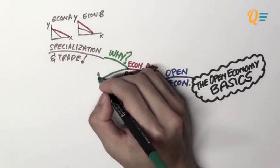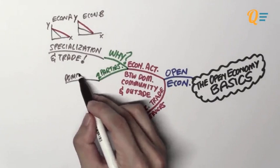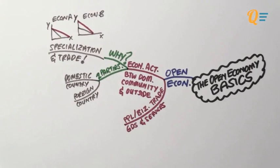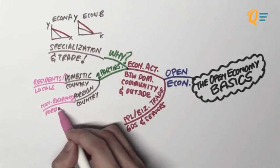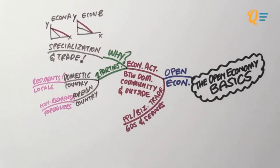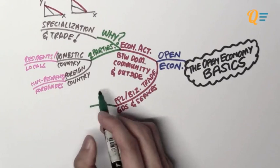This economic activity in general will be between two parties. We have the domestic country, which is the home country, and we have the foreign country, or the other country. The people that live in a domestic country are known as residents or locals. And the people from the other countries are known as non-residents or foreigners. In Singapore, we love to call them foreign talent. I'm introducing these terms because I'll be using them quite frequently in the explanations later.